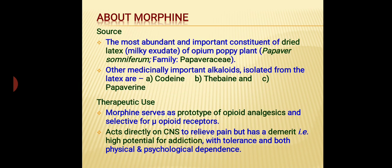The source of morphine: it can be obtained from the dried latex of the opium poppy plant. The scientific name is Papaver somniferum and it belongs to the family Papaveraceae. Other medicinally important alkaloids that can be isolated from the latex are codeine, thebaine, and papaverine.